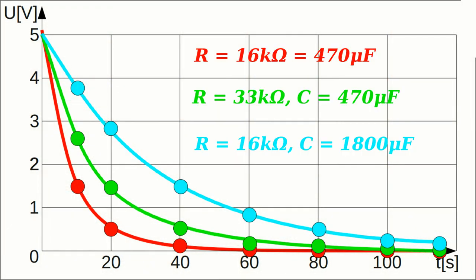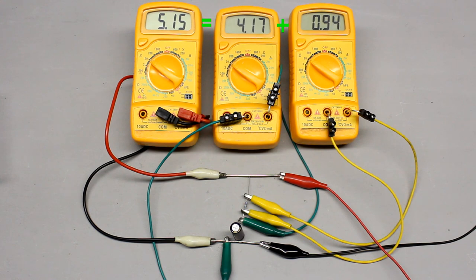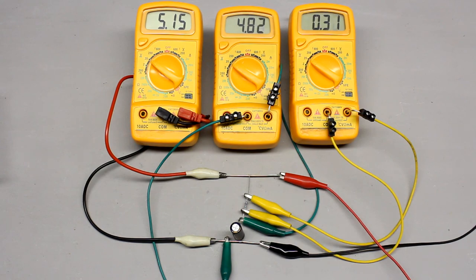The amount of charge entering the capacitor per time interval is decreasing because the difference in voltage between the constant input voltage and the voltage drop across the capacitor is decreasing too. During the whole charging procedure, the directed sum of the electrical potential differences around the closed network is zero — in other words, the voltage drop across the resistor plus that at the capacitor equals the absolute value of the input voltage. While the voltage drop at the capacitor is increasing over time, that at the resistor must be decreasing.